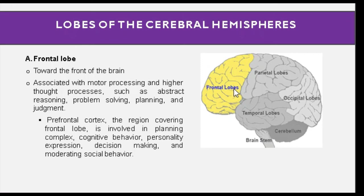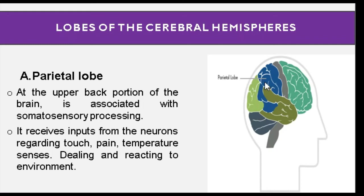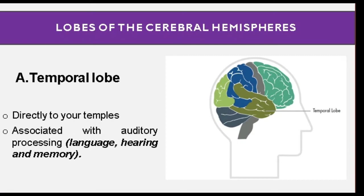The parietal lobe is the upper back portion of the brain and is associated with somatosensory processing. It receives inputs from neurons regarding touch, pain, temperature, and senses, dealing and reacting to the environment. The temporal lobe is located at the temples and is associated with auditory processing, language and hearing, and also memory.